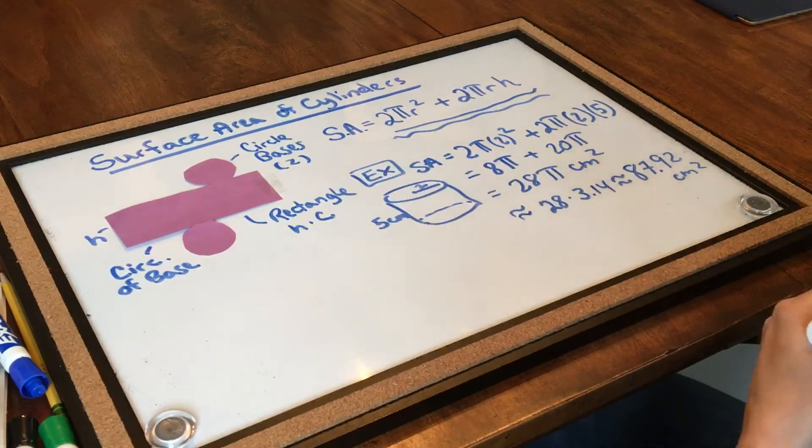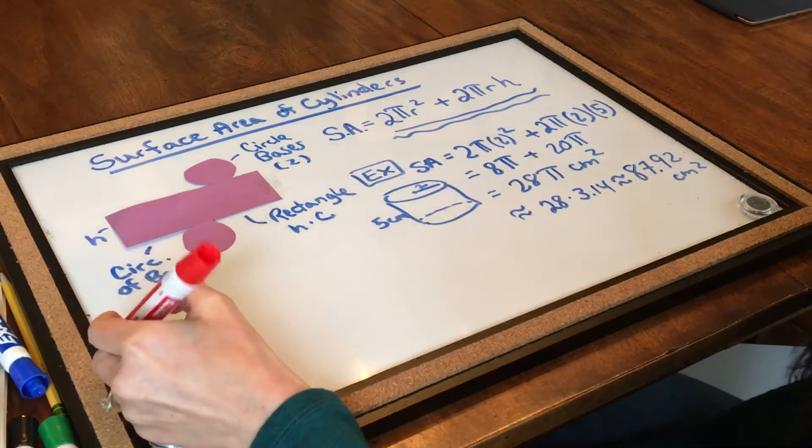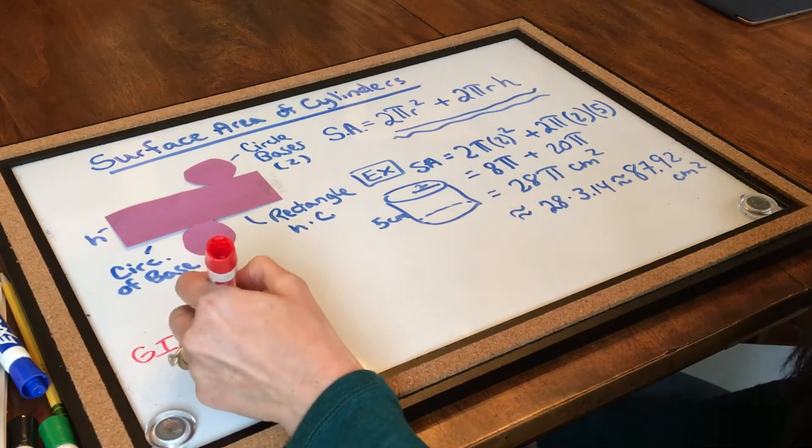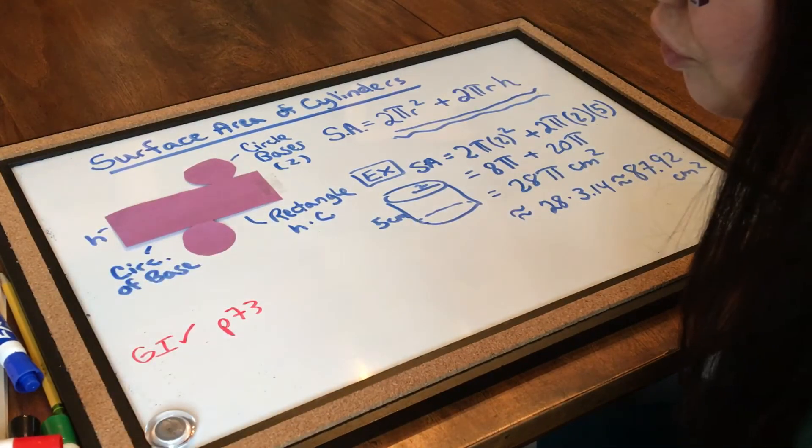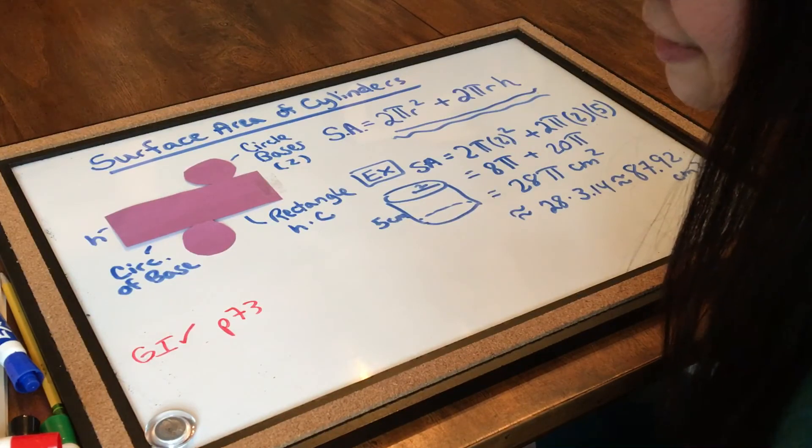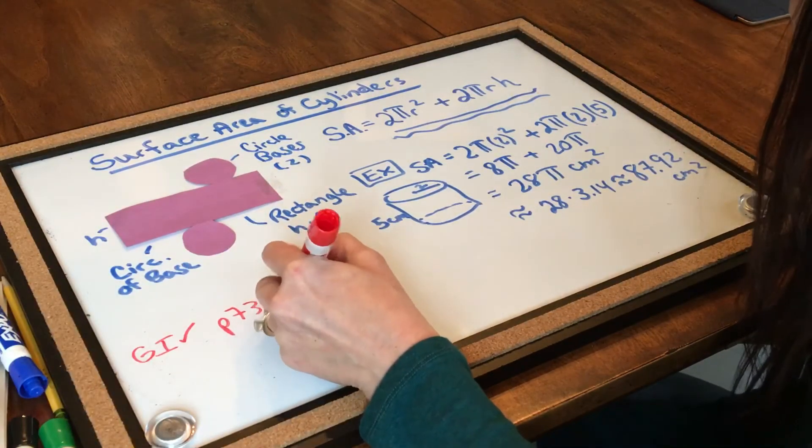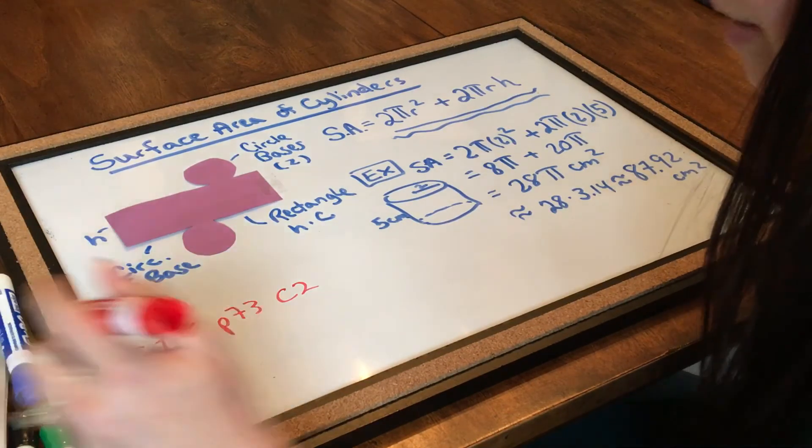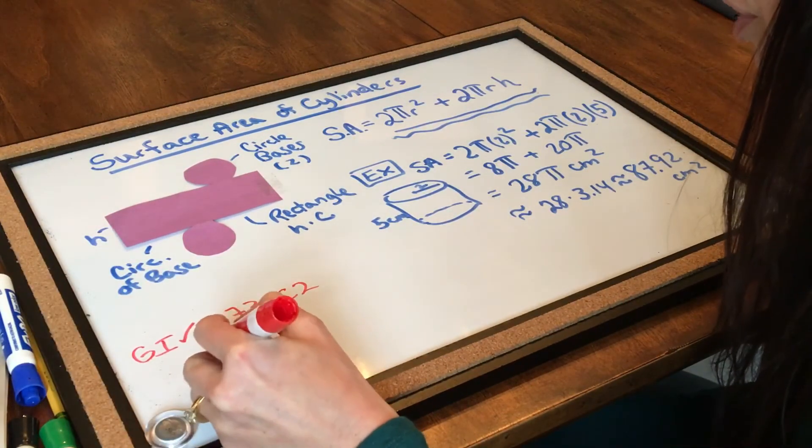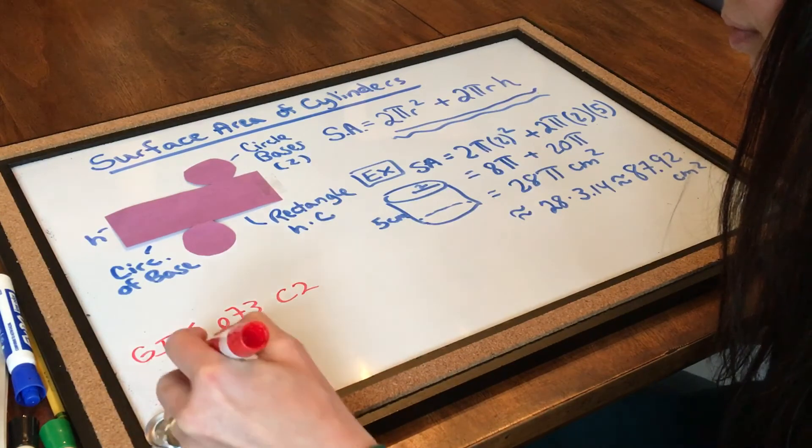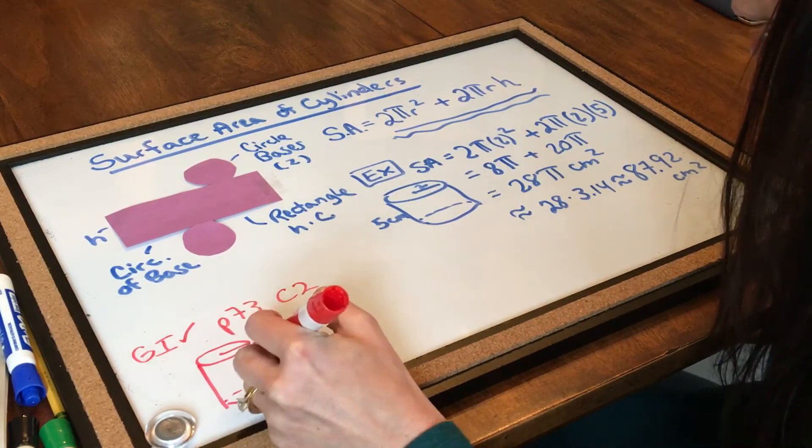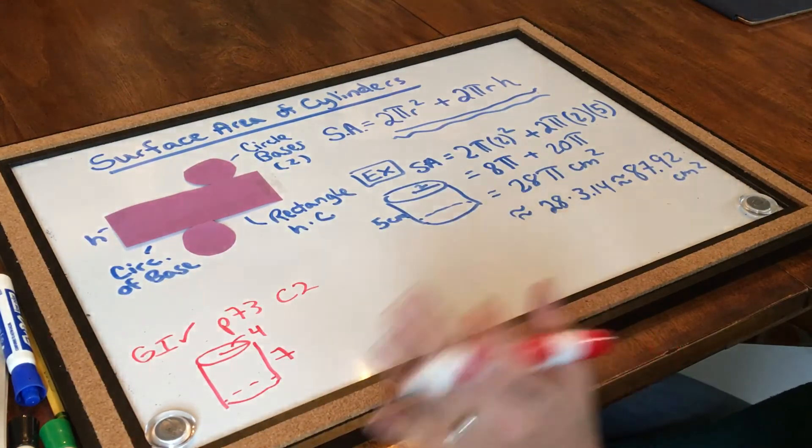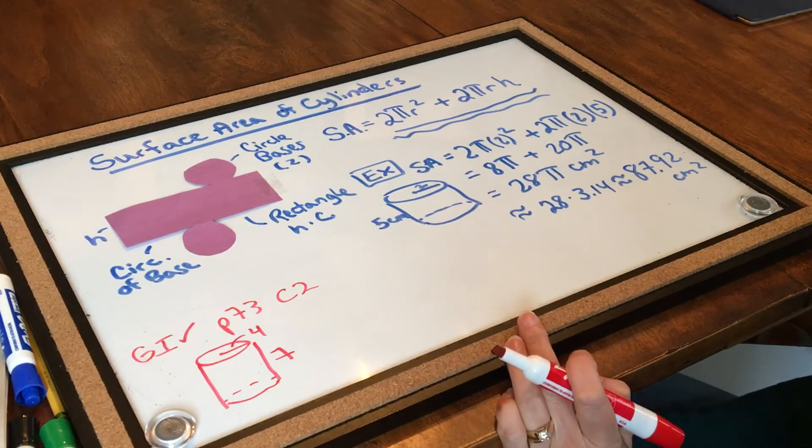Okay, I think you're ready for the gotta check. So your gotta check, remember, is on page 73, and I believe we were doing C, so C2. And that cylinder had a height of 7 and a radius of 4. So just to kind of draw it in, it had a height of 7 and a radius of 4. Pause the video, give this one a shot, and come back when you're ready.